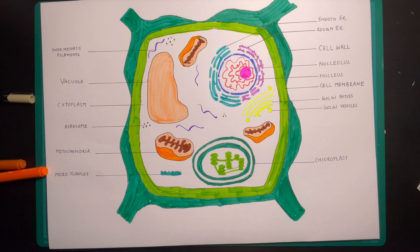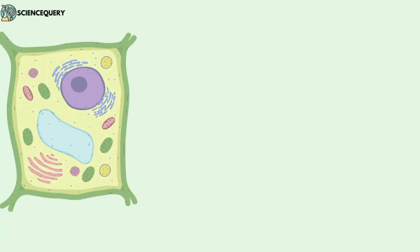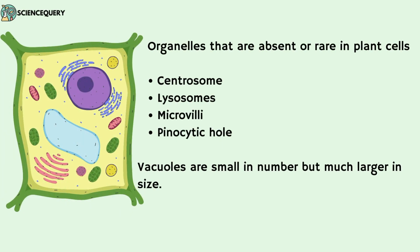Now let us see what organelles are absent in plant cells. Centrosomes, lysosomes, microvilli and pinocytic holes are absent in plant cells. Vacuoles are small in number but they are much larger in size.